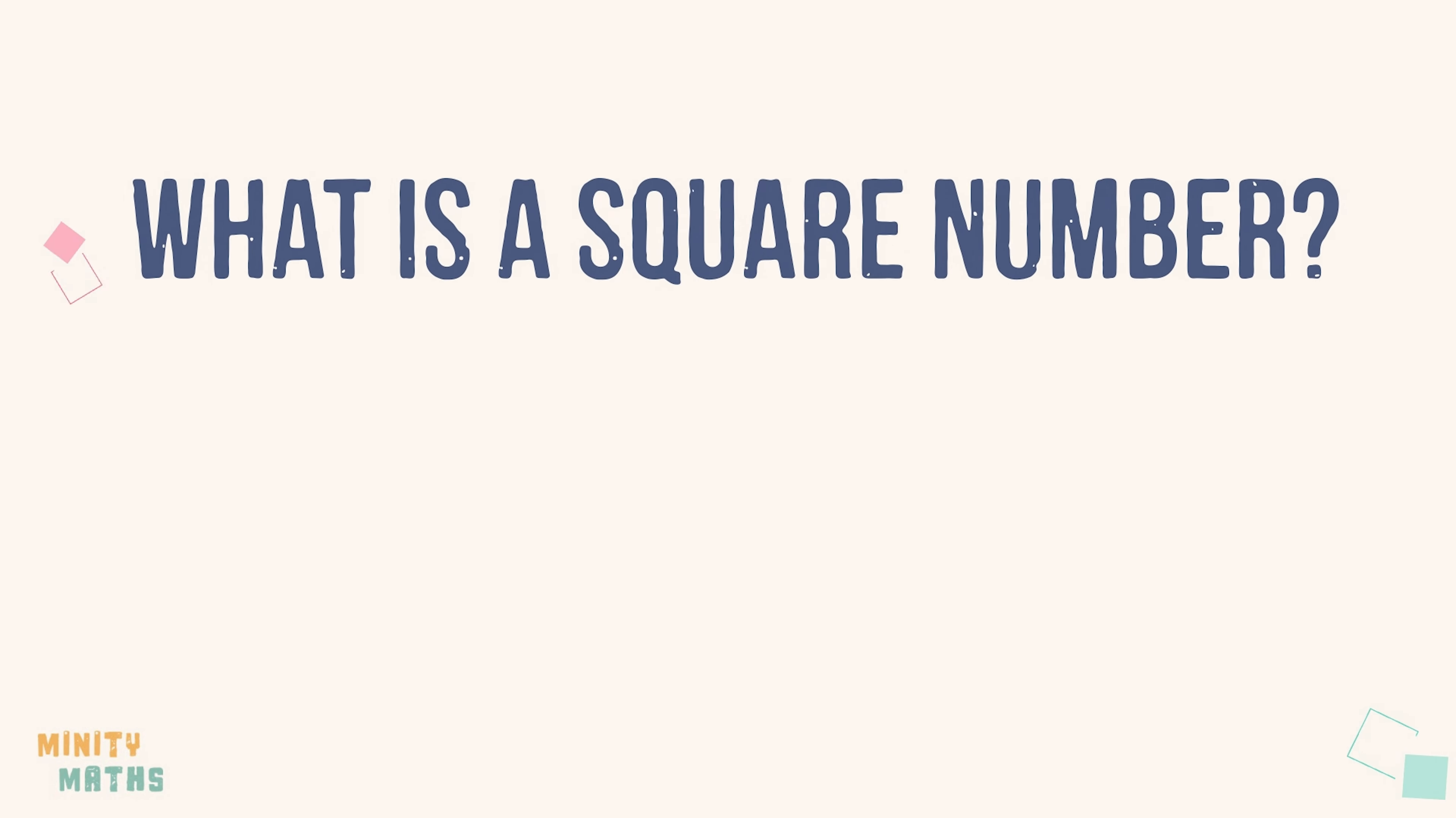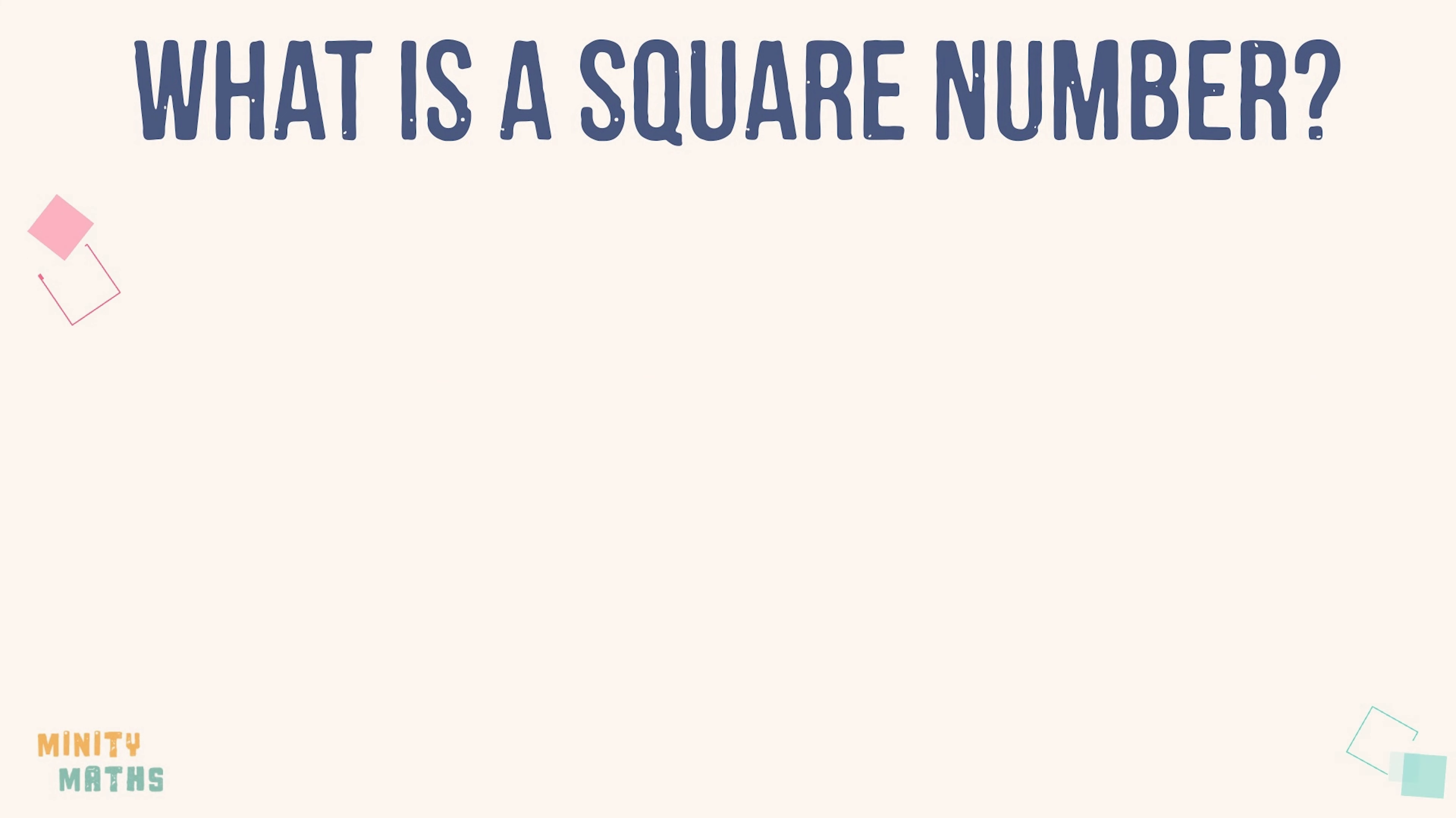So, what is a square number? A square number is a number that can be made into a square by using that same number of smaller squares.